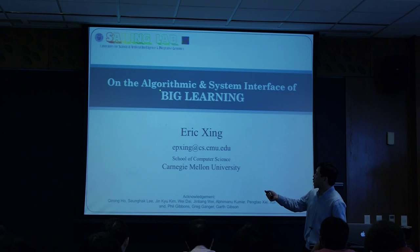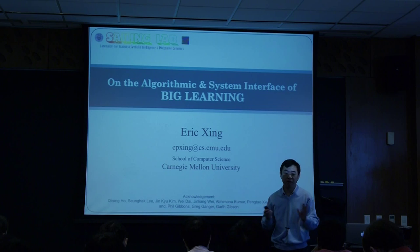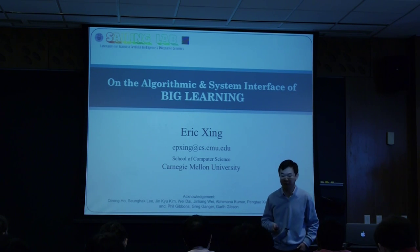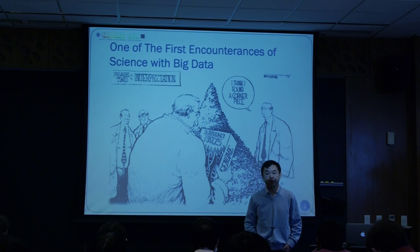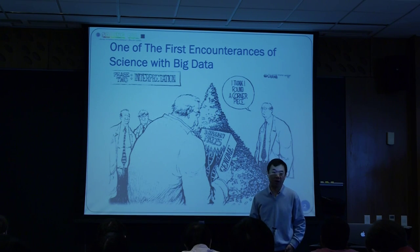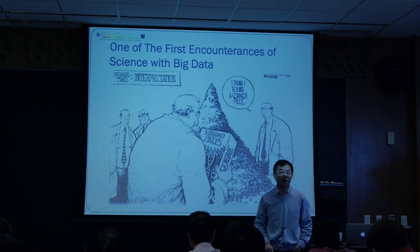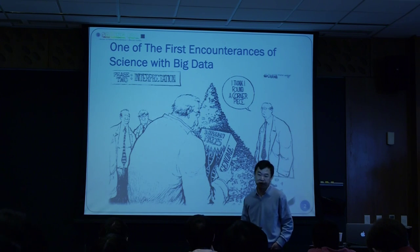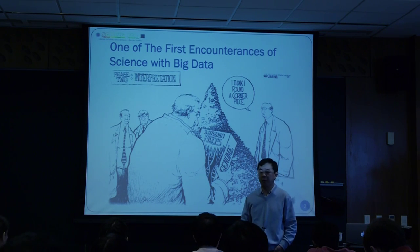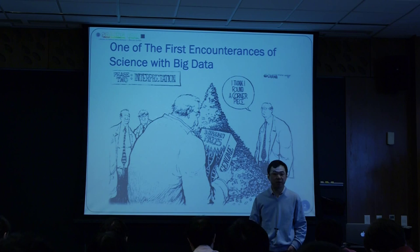I'm going to focus on the algorithmic and interface of big learning, but as you can see, it actually involves materials and topics even beyond that. We're going to try to visit a big spectrum or landscape of machine learning and talk about how to address many of the common problems we encounter when deploying these machine learning algorithms to different problems. There has been a few years of hype around big data, and people are talking about big data being even a form of currency that can be sold for money or priced.